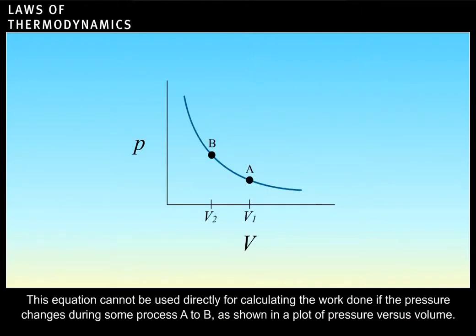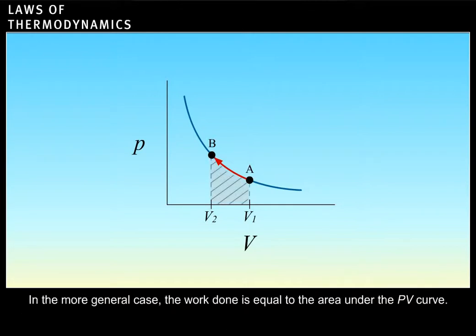This equation cannot be used directly for calculating the work done if the pressure changes during some process A to B, as shown in a plot of pressure versus volume. In the more general case, the work done is equal to the area under the P-V curve.